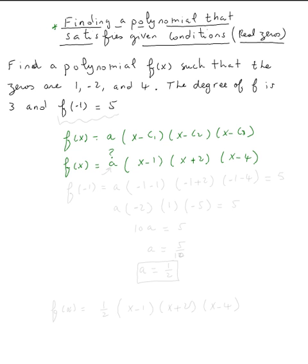Now all we need to do is find a. This is why they give us the initial condition f of negative one equals five. What does that say? f of negative one means wherever you see x, plug in negative one. So a times negative one minus one, times negative one plus two, times negative one minus four equals five.